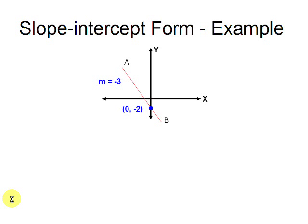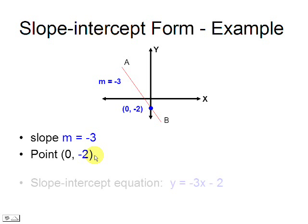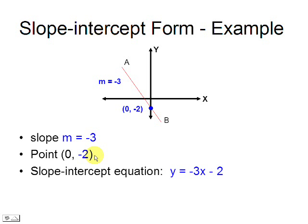In this example, we know the y-intercept and the slope of a line. The slope is minus 3 and the point is 0 minus 2. Thus, the slope-intercept expression is y equals minus 3x minus 2.